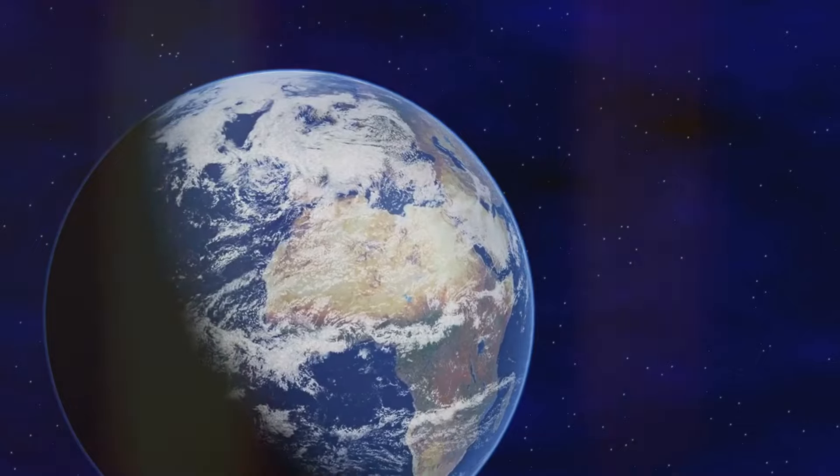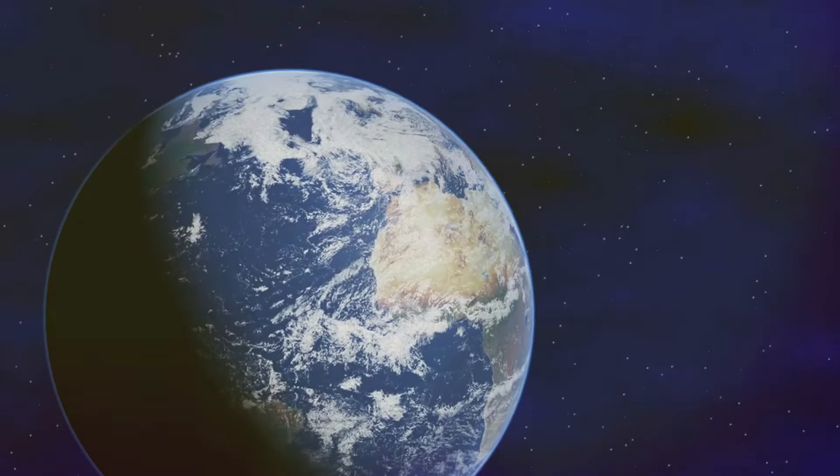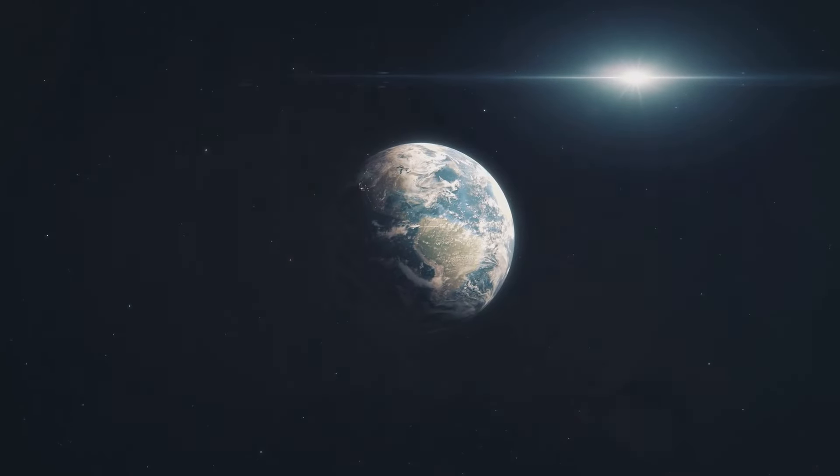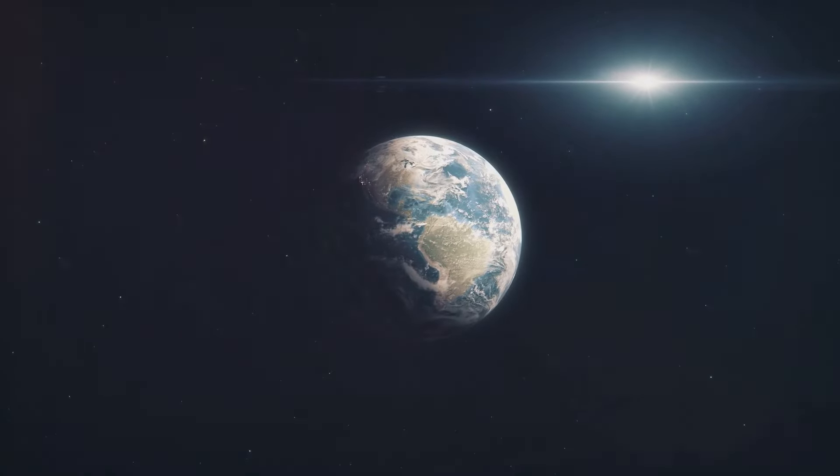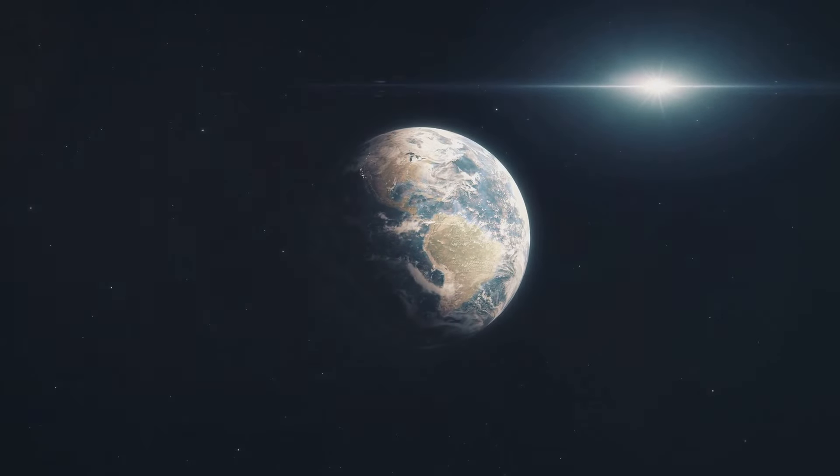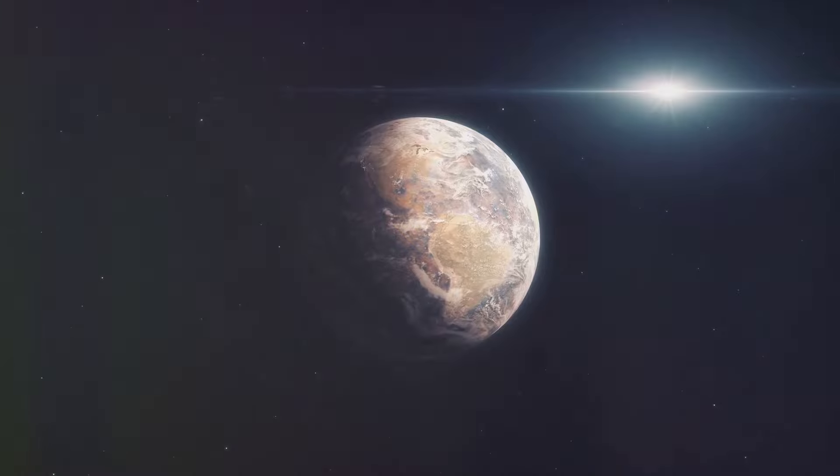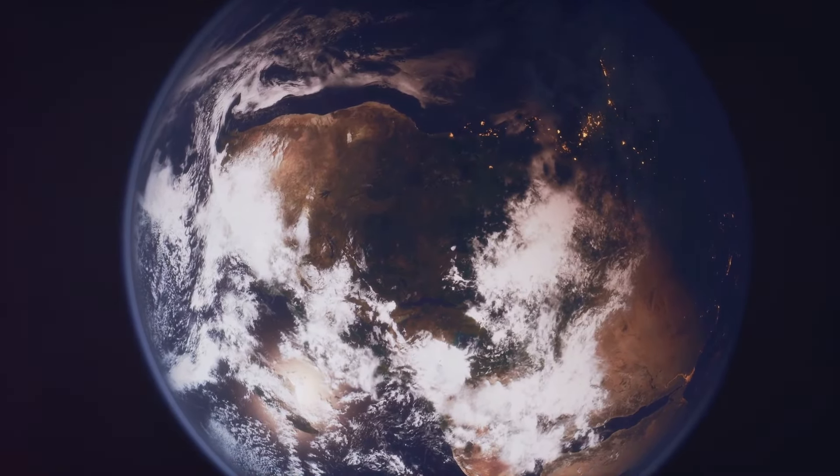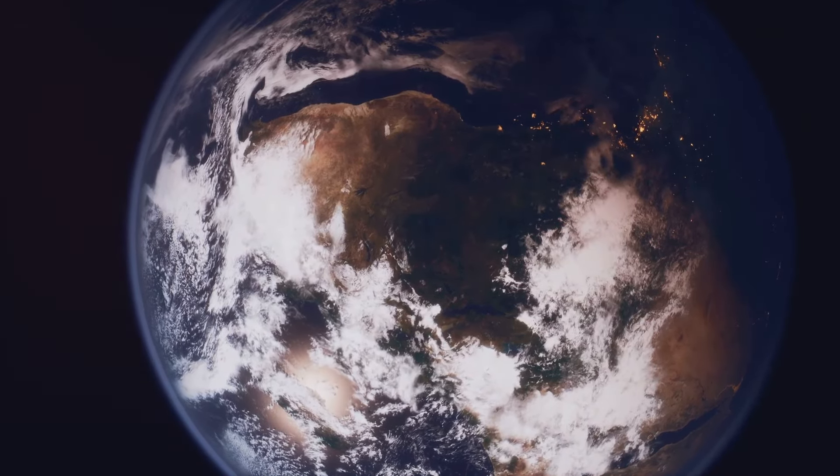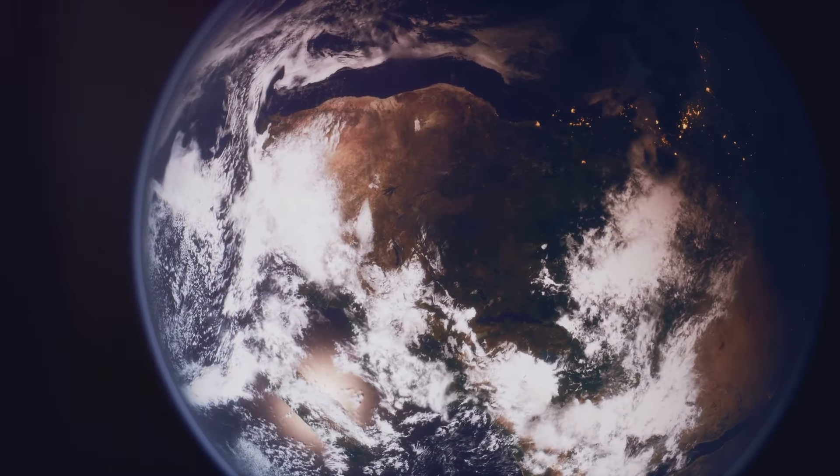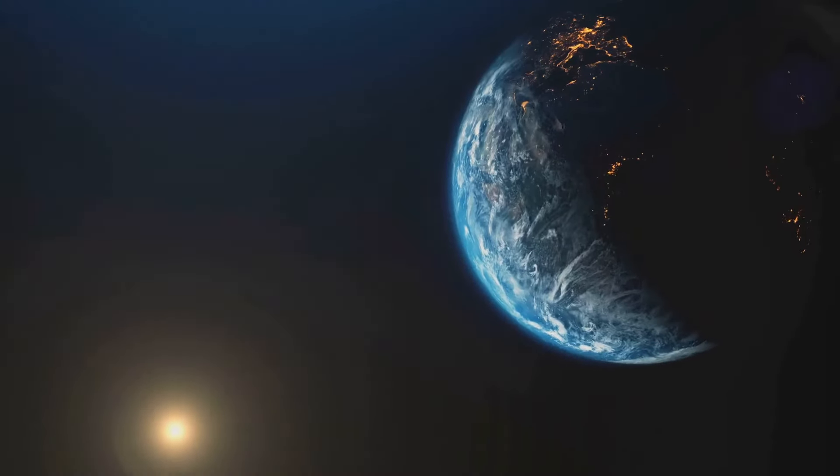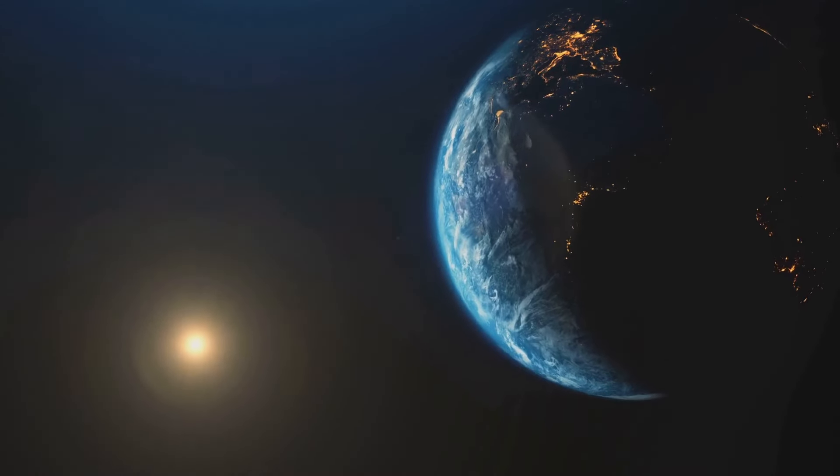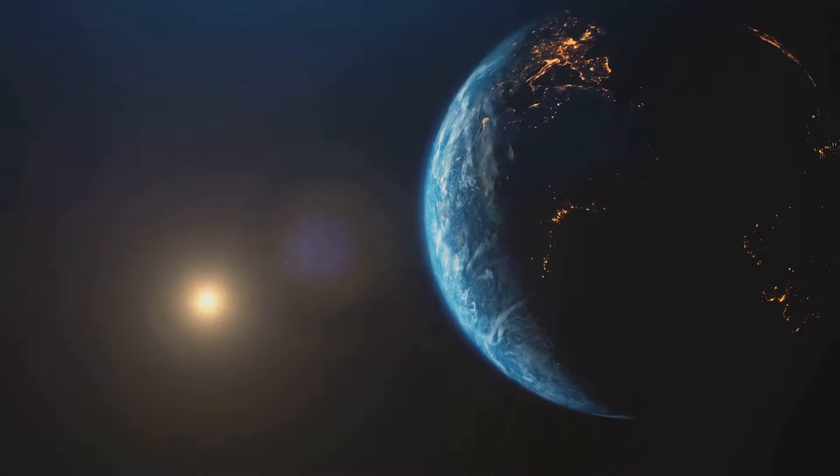Earth, the third planet from the sun, stands out as a unique oasis in our solar system. Its moderate temperature, driven by the greenhouse effect of its atmosphere, allows for the existence of liquid water, a key ingredient for life as we know it. Earth's dynamic geology, fueled by plate tectonics, continually reshapes its surface, creating mountains, valleys, and oceans. Its protective atmosphere shields life from harmful solar radiation, making Earth a haven for a diverse array of living organisms.